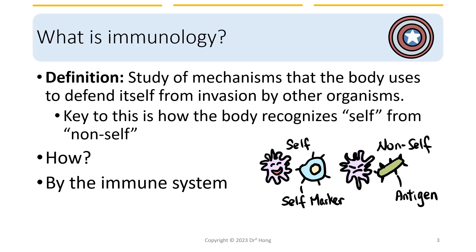We will begin with some very basic definitions. What is immunology? By definition, it is the study of mechanisms that the body uses to defend itself from invasion by other organisms. In this course, you'll learn about a lot of the mechanisms, or cellular mechanisms, of how the body defends against other invading organisms. The key to immunology is how the body recognizes self from non-self. What is an invading organism? What is a self molecule?